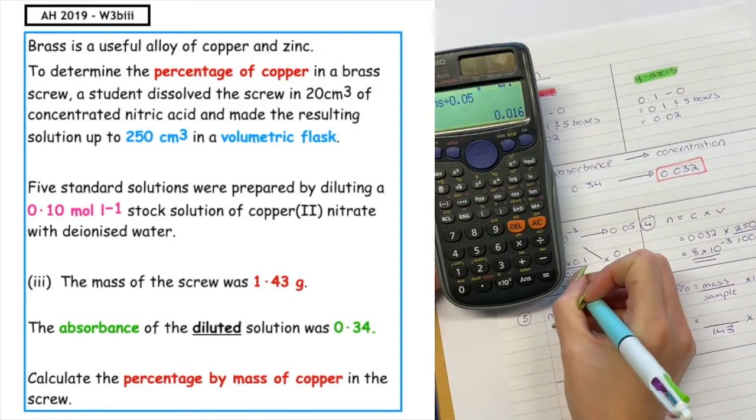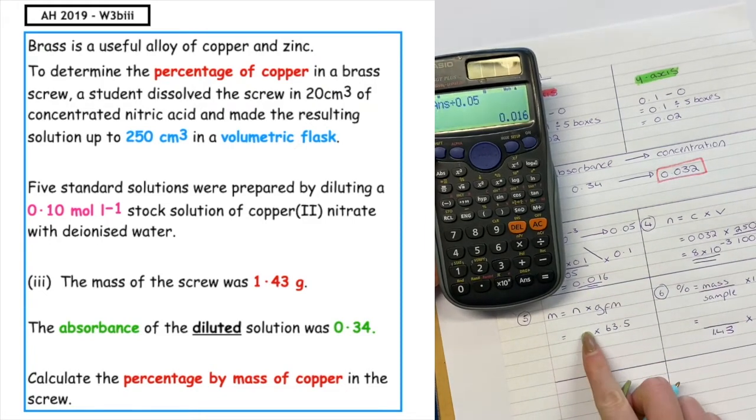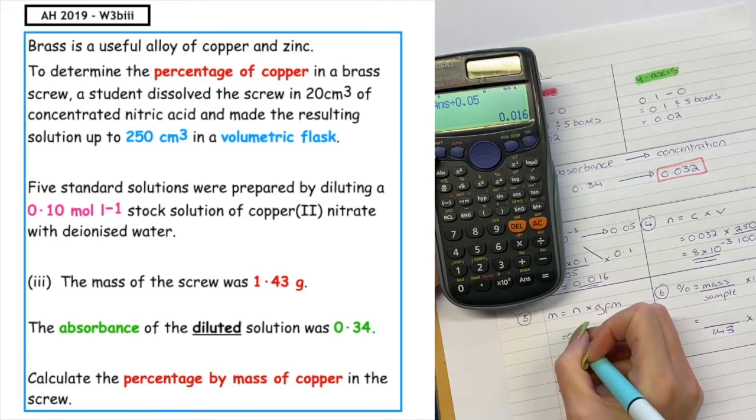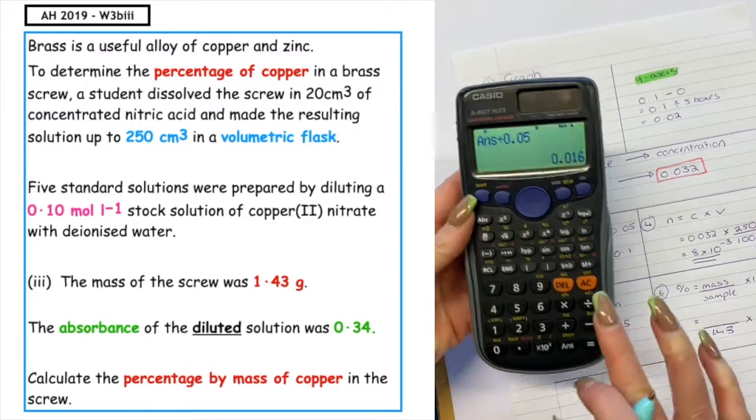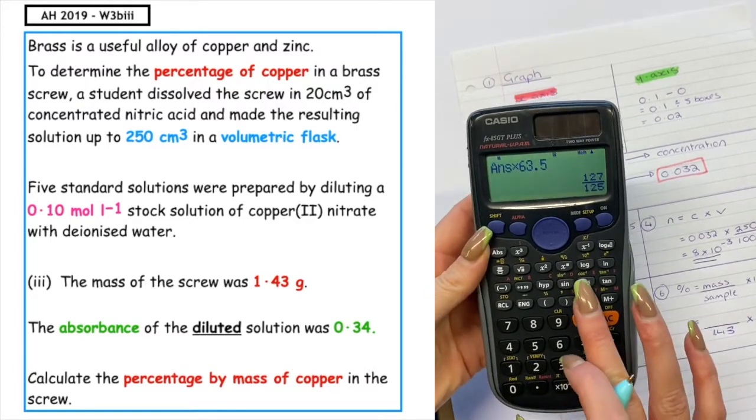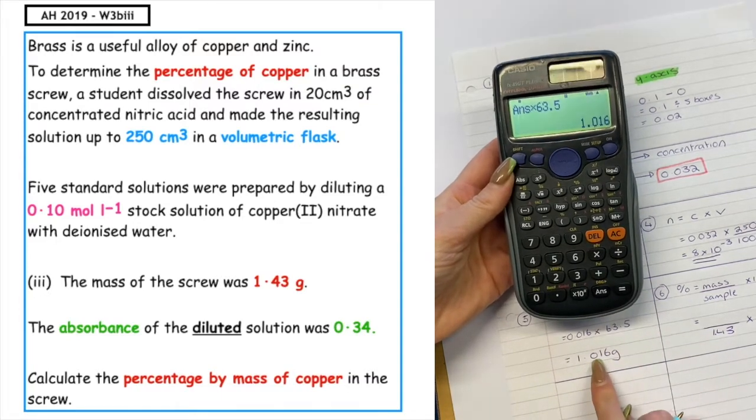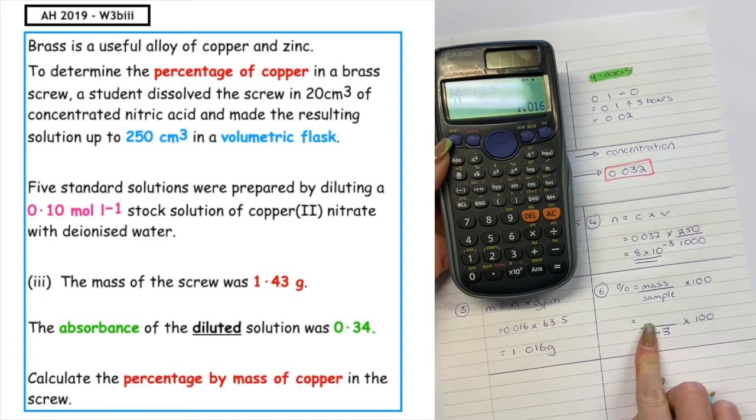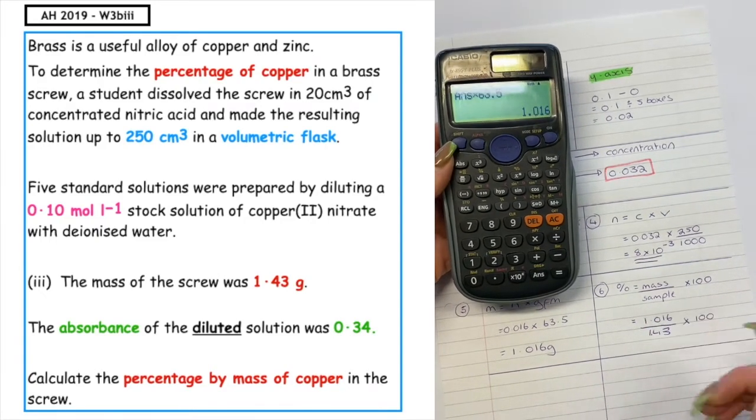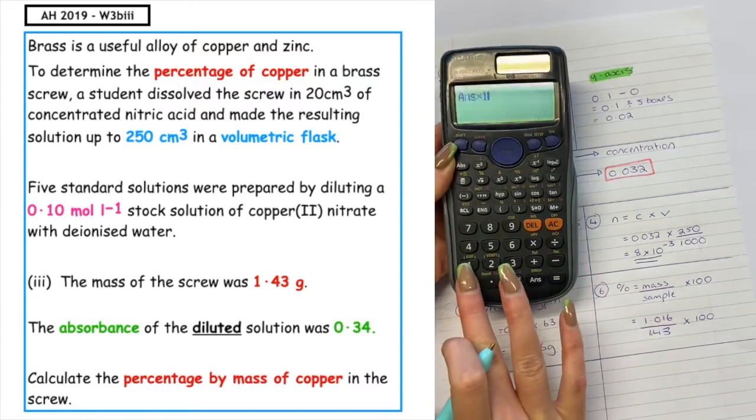We've got 0.016. This is the number of moles that we can insert into step 5. 0.016 times by 63.5, which is the GFM of copper, comes in at 1.016 grams. We can now insert that into this part of the calculation. 1.016 divided by 1.43 equals times by 100. That gives us a percentage of 71%. And this is the final answer.